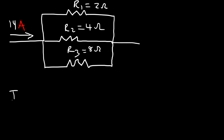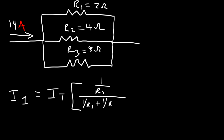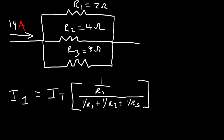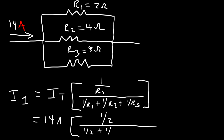For a three-resistor circuit, the formula for I1 is: I1 equals the total current times (1/R1) divided by (1/R1 + 1/R2 + 1/R3). Notice that the subscripts now match. The total current is 14 amps and R1 is 2, so we have 14 times (1/2) divided by (1/2 + 1/4 + 1/8), which comes out to 8 amps. So I1 is 8 amps.